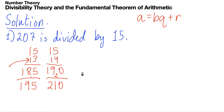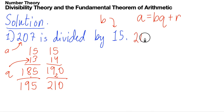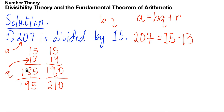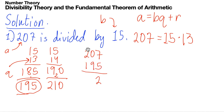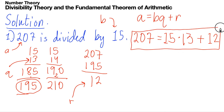So our quotient q must be 13. Now let's write the full equation: 207 equals 15 times 13 plus r. The remainder is 207 minus 195, which gives us 12. So the answer is: 207 equals 15 times 13 plus 12. Dividend equals divisor times quotient plus remainder — that's number one done.